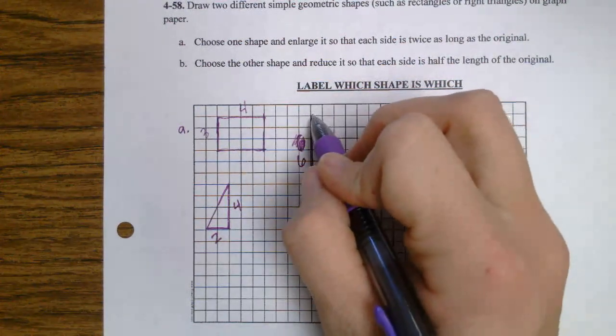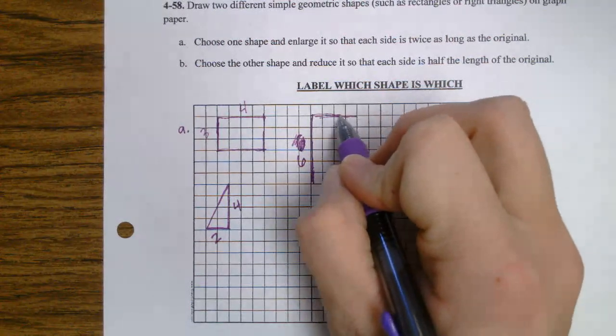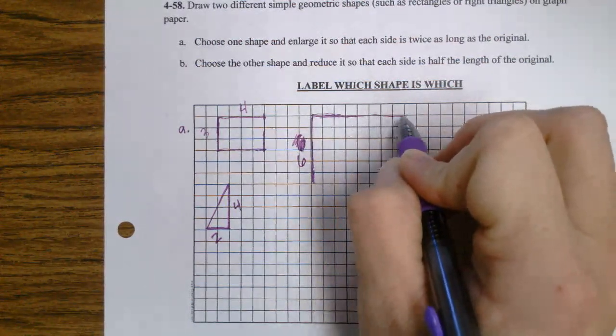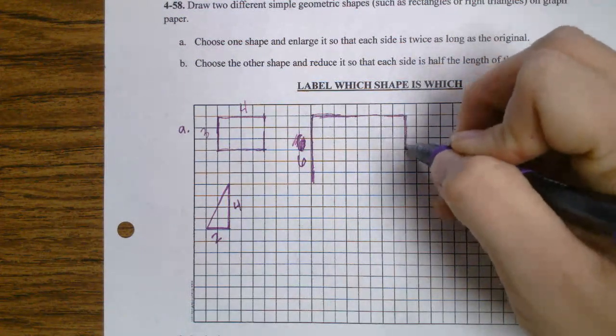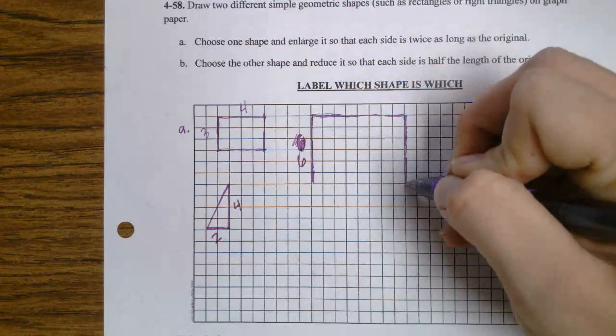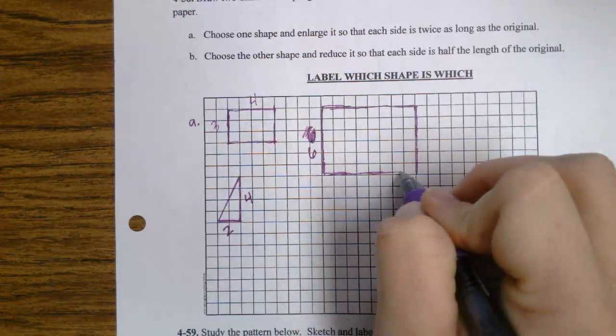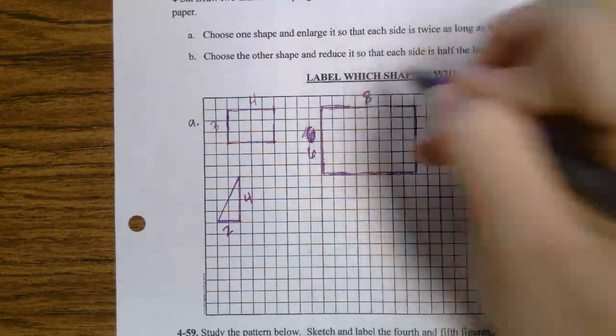And I'm going to redraw my 6 because I got lost. And 4, 2 of 4 is 8. So it's going to go 8 across. There's 4, 5, 6, 7, 8. And then down 6 again. And then over 8 again. That's my enlargement for part A.